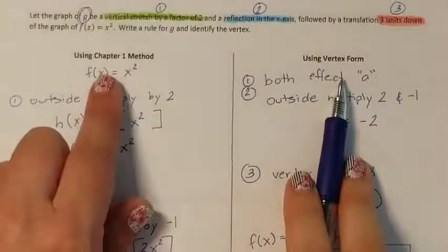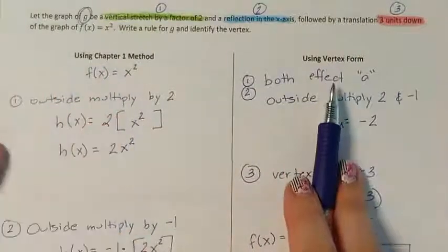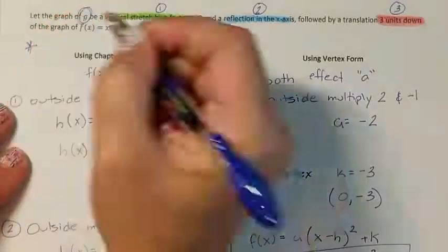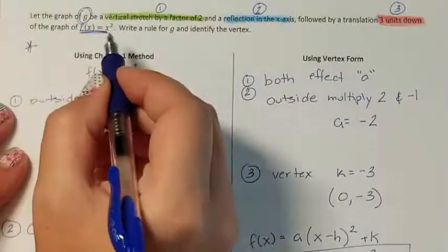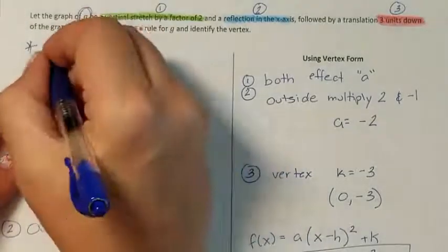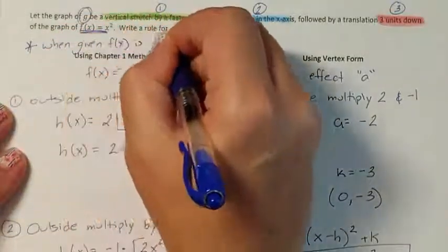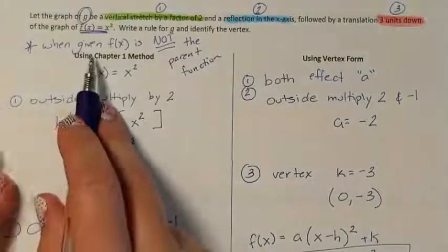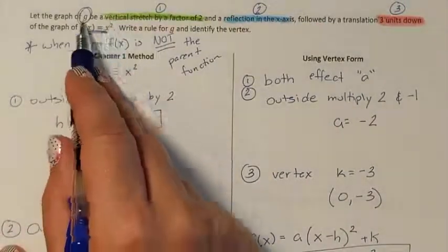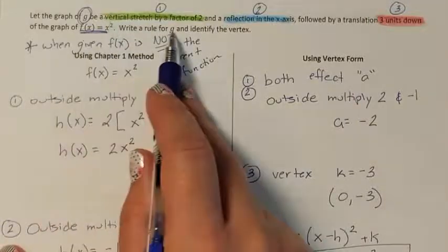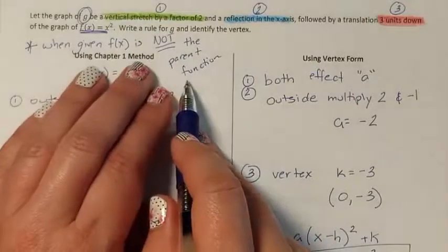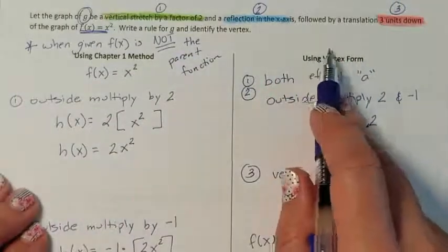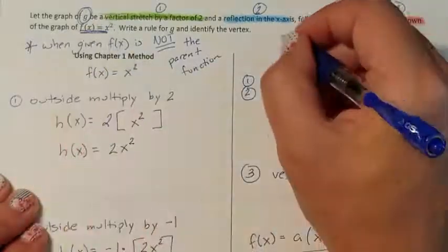We solved this problem using two different methods. When should you use which? Use the Chapter 1 method when the function they give you is not the parent function. Use the Chapter 2 vertex form method only when the original f(x) they give you is the parent function.